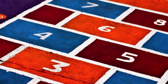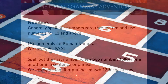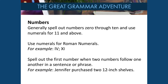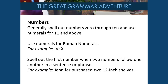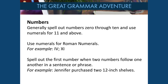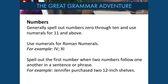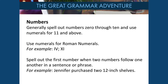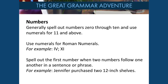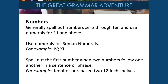Let's talk about numbers. In general, spell out numbers 0 through 10 and use numerals for 11 and above. Use numerals for Roman numerals, and spell out the first number when two numbers follow one another in a sentence or phrase — for example, Jennifer purchased two 12-inch shelves.